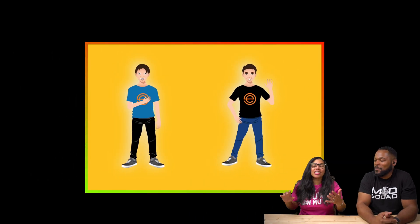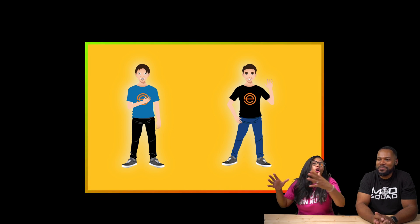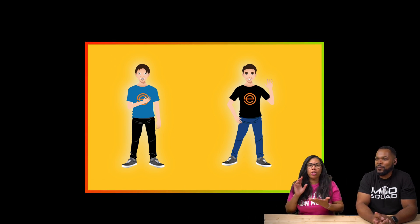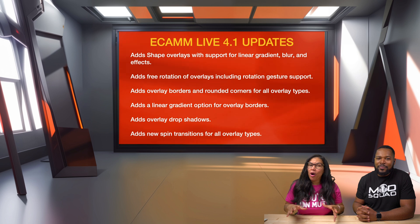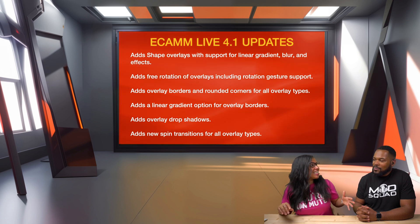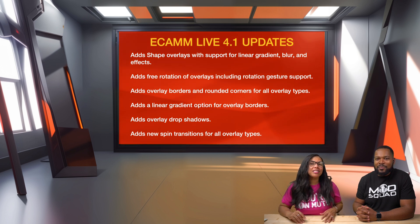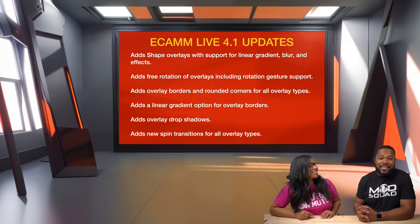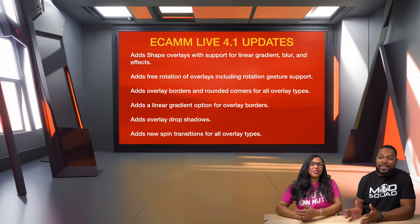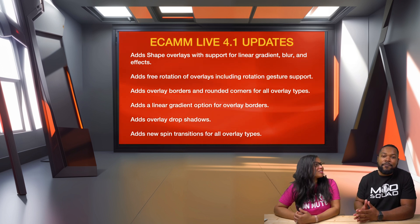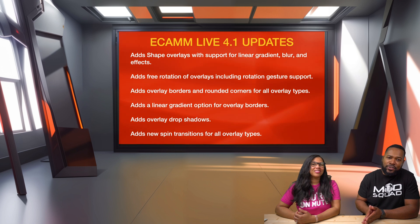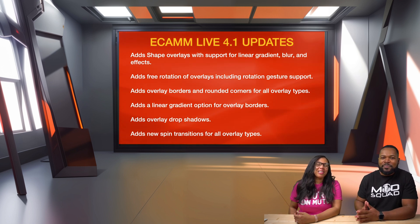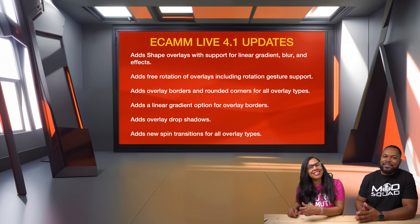You can apply spin transitions on text, movies, and every overlay type. Those are the main updates on shape overlays in Ecamm Live 4.1. Have fun, test it out, and check out the rest of the feature update videos we've put together. We'd love to see what you create — if you find any of these new features helpful to your content creation journey, let us know in the comments. My name is Anahi, and I'm Fulgen Sender, and you're watching Building Blocks. Bye!